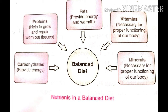We know that the nutrients in the balanced diet are carbohydrates which provide energy, proteins which help to grow and repair the worn out tissues, fats which provide energy and warmth, vitamins and minerals which are necessary for proper functioning of our body.